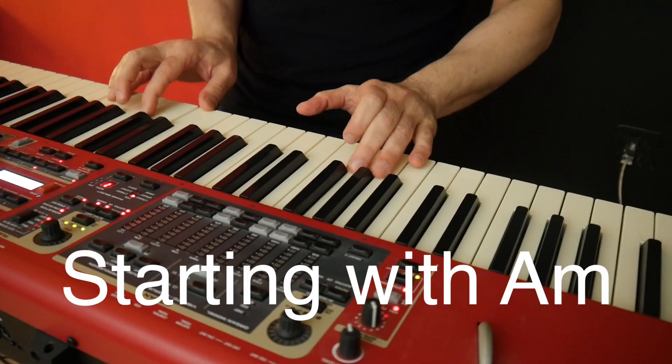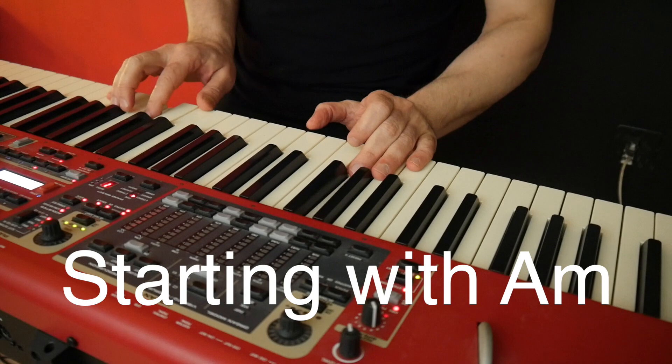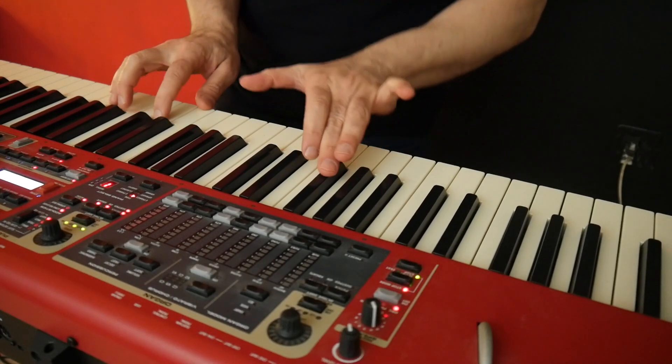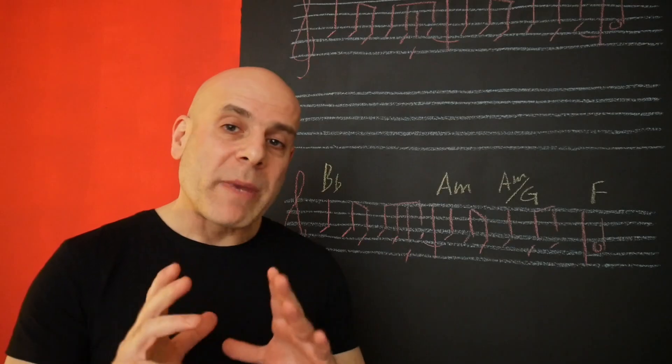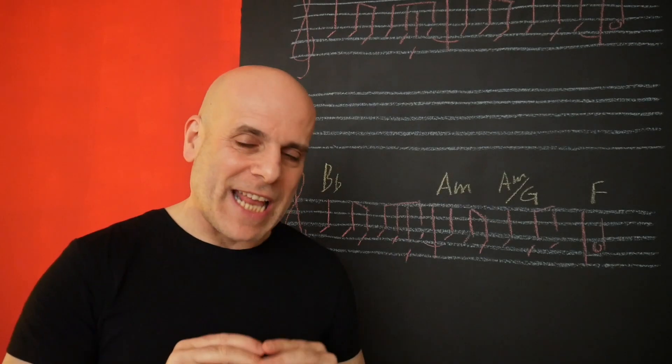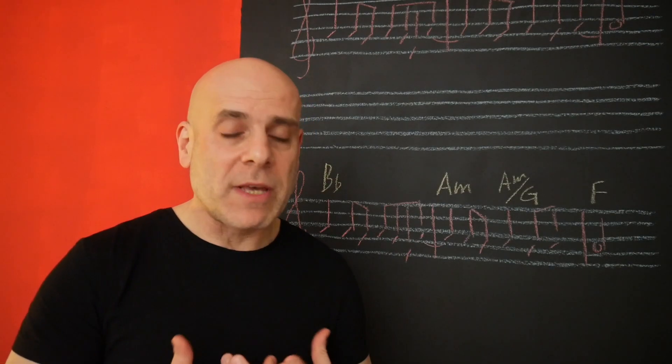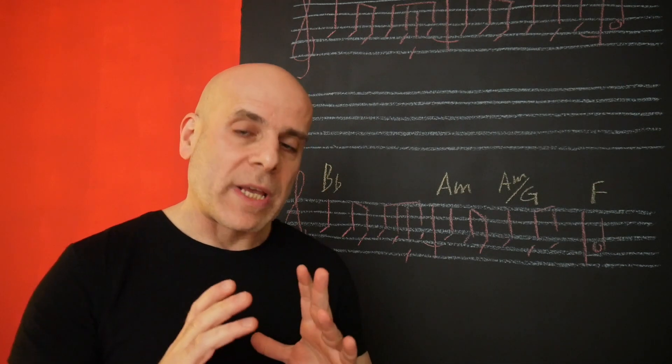First one. Second one. So the Bb at the beginning of the second statement is what we call in music theory a neighbor chord.